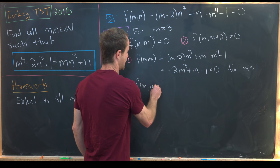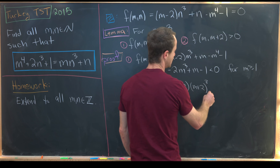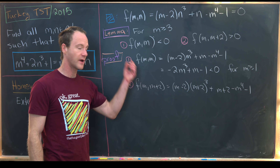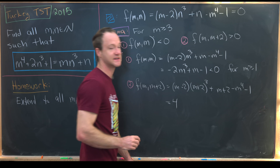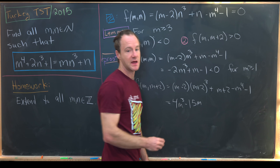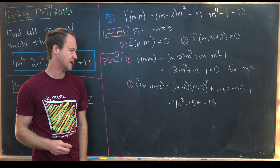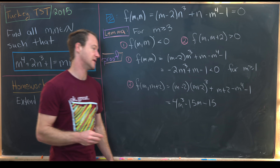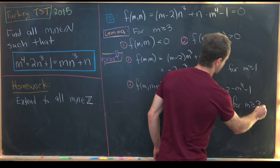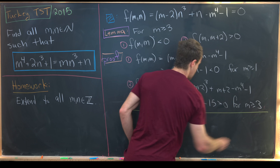For part 2: f(m, m+2) = (m−2)·(m+2)³ + (m+2) − m⁴ − 1. Expanding and combining, this equals 4m³ − 15m − 15. You can verify using calculus or another method that this is greater than 0 for m ≥ 3, which is exactly the range we're interested in.